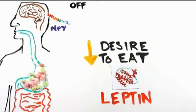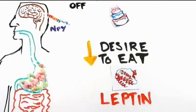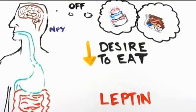But if this hunger regulation system is in place, why can't we say no to that piece of cake or second helping of chips?